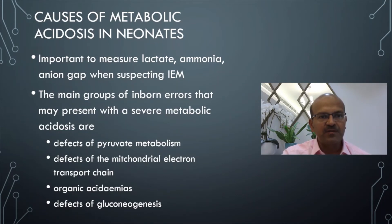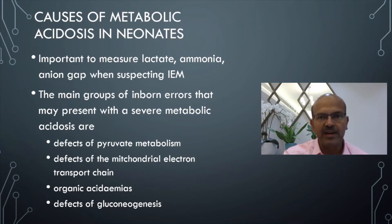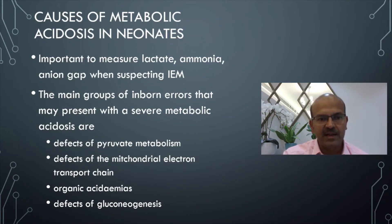In terms of inborn errors of metabolism, there are a few errors of metabolism which can lead to metabolic acidosis. It is important when we have persisting metabolic acidosis to include lactate, ammonia, and anion gap measurement, especially when the course suggests an inborn error of metabolism. The main groups of IEMs presenting with severe metabolic acidosis include defects of pyruvate metabolism, some mitochondrial defects, and other defects of the mitochondrial electron transport chain.